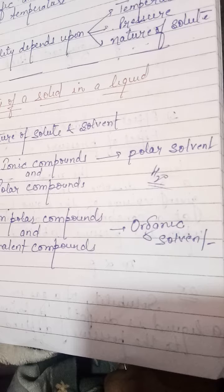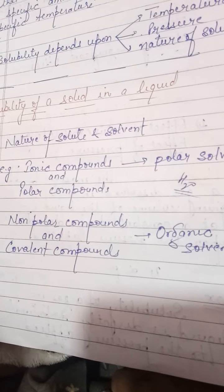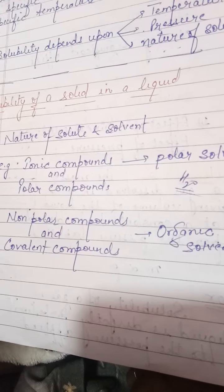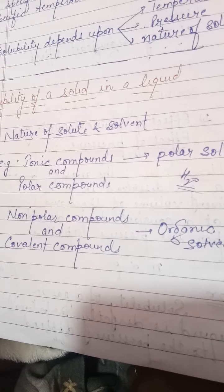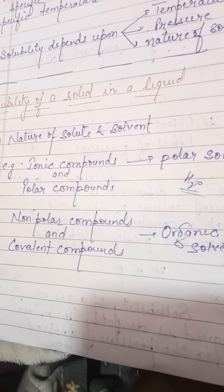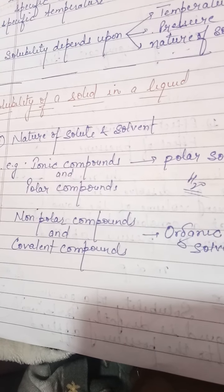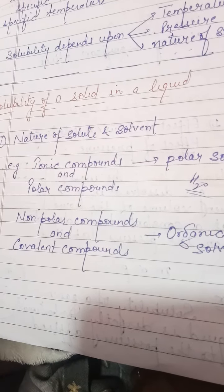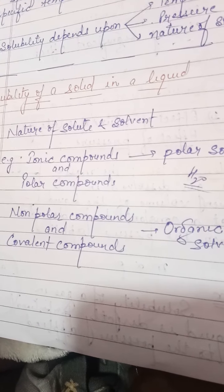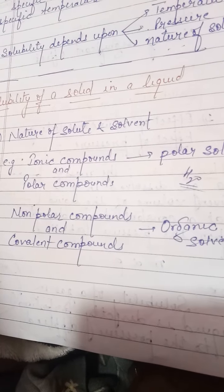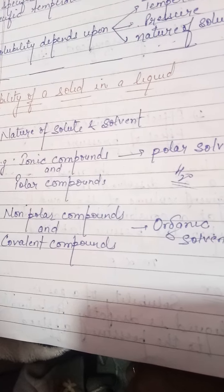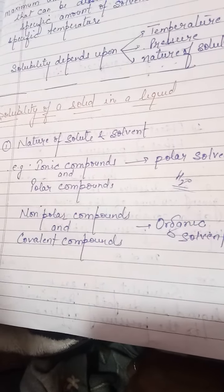Polar solvents — the simple example is water. If there are non-polar compounds or covalent compounds, they will dissolve in organic solvents like benzene, carbon tetrachloride, carbon disulfide — these are examples of organic solvents. The principle is: if solute and solvent are of similar nature, they will dissolve well.